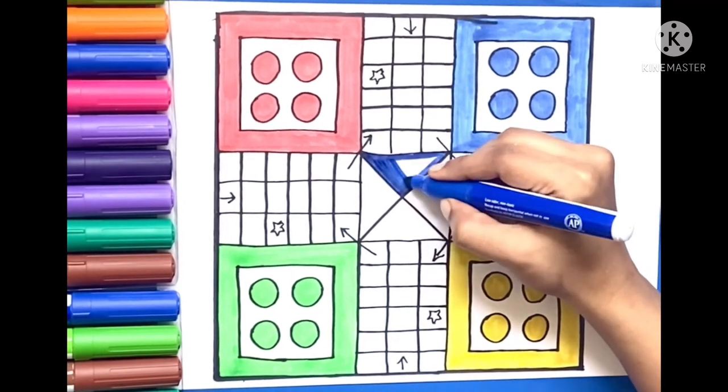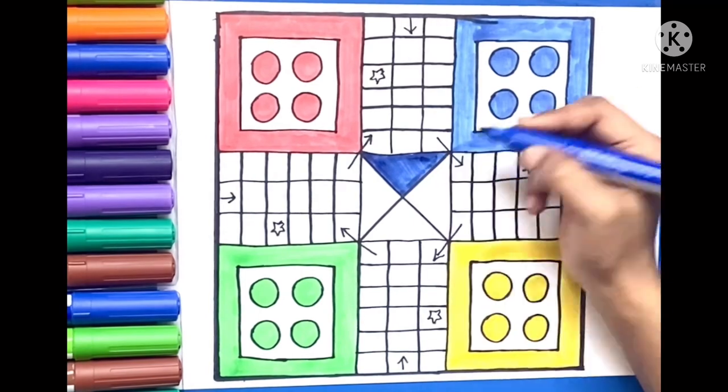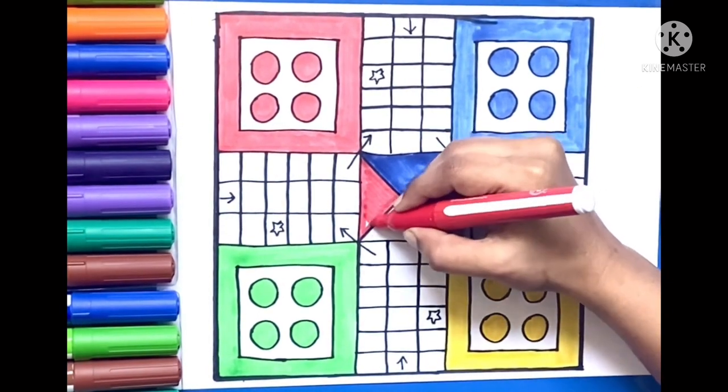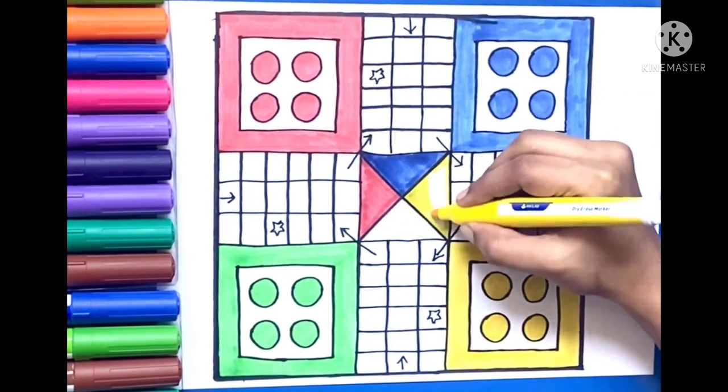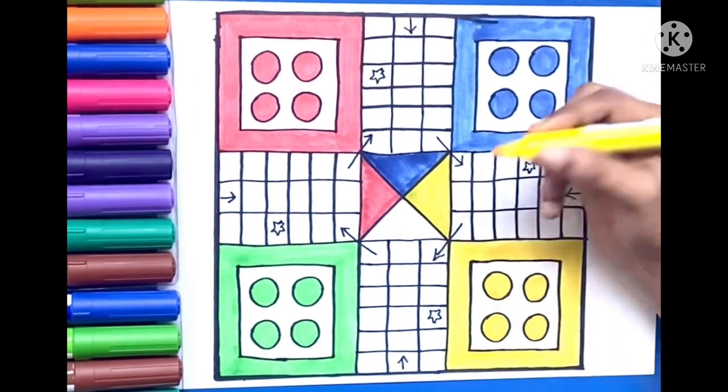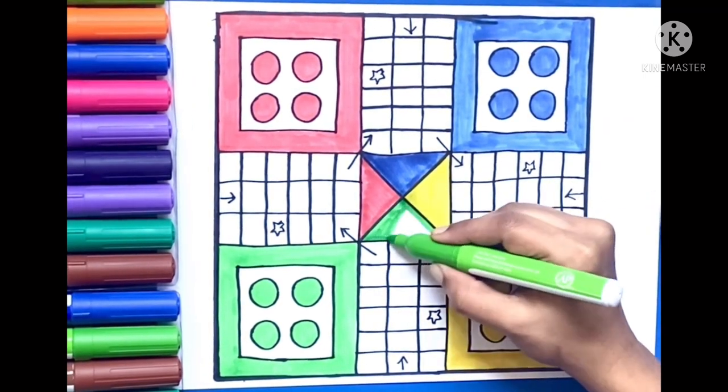Blue on top triangle, red on left triangle, yellow on right side triangle, green on bottom side triangle.